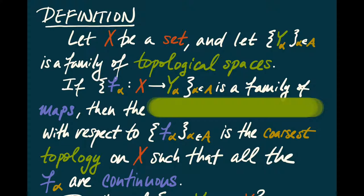We'll let X be a set and take a collection of topological spaces Y_alpha. If we have a family of maps F_alpha from X to Y_alpha, one for every alpha in A, then we can give X a topology. This is going to be the coarsest topology on X such that all of the F_alphas are continuous. This is called the initial topology.